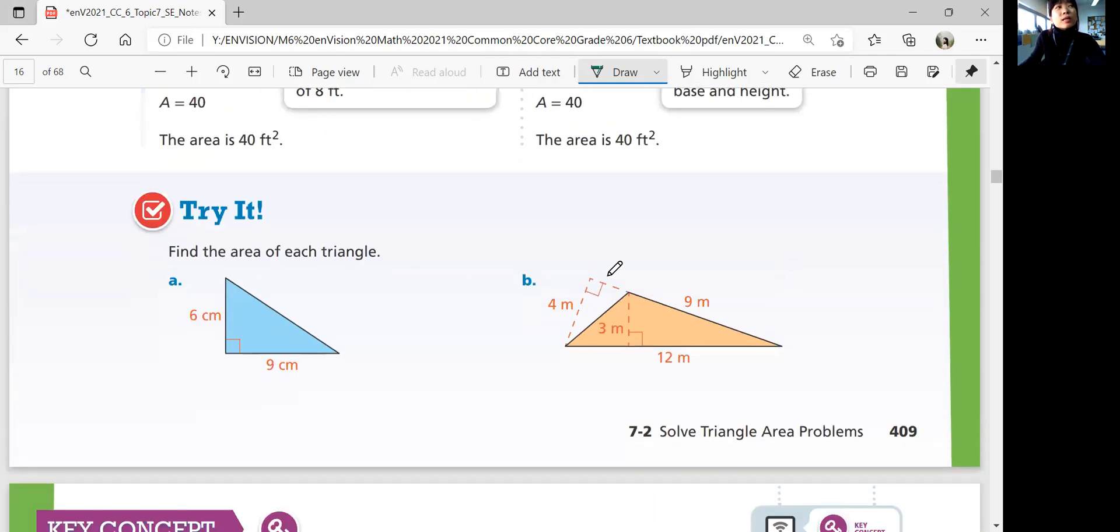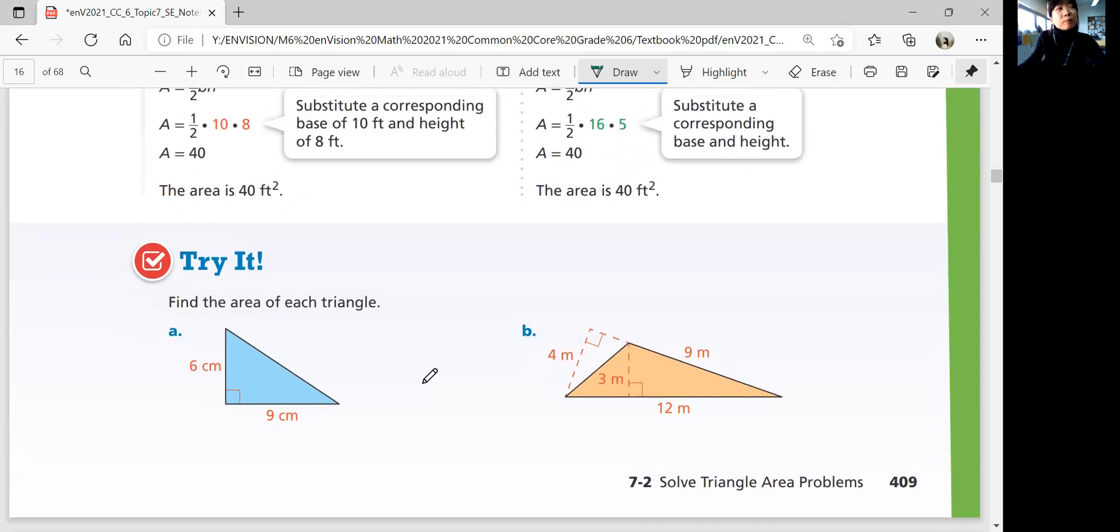So let's look at try it question over here, part A and B. See if you can find the area of these two triangles and come back when you're ready for answers. Okay, are you ready? So again, your area of the triangle is one half times base times height. So you multiply base times height, 9 times 6, 54, divided by 2, is 27 square centimeters.